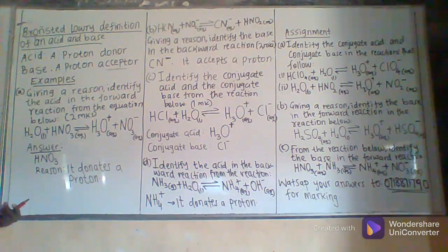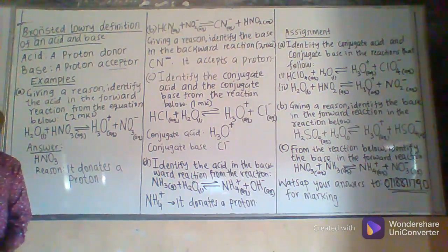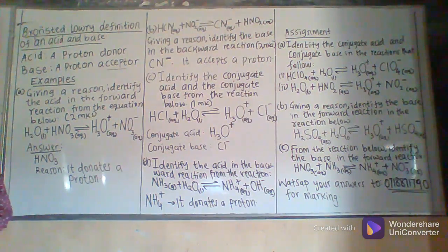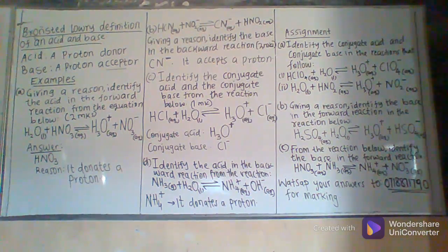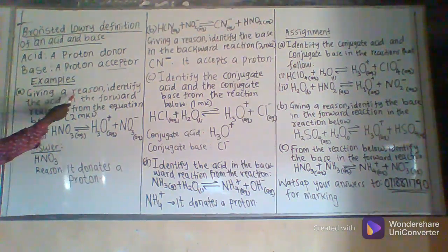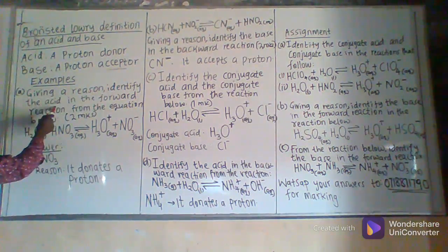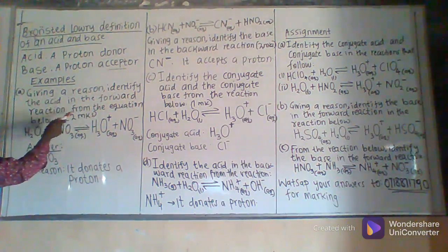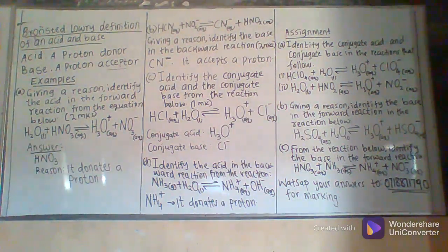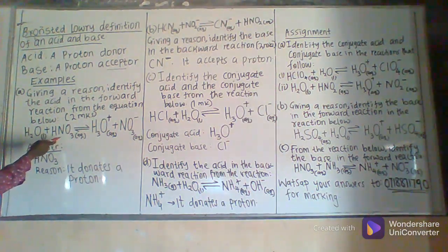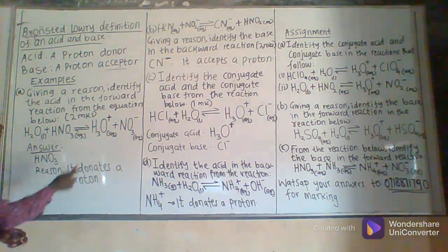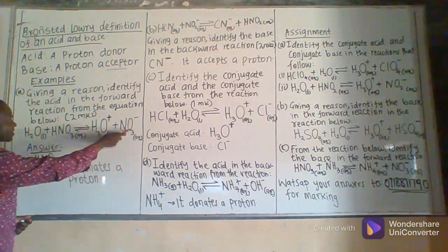I will take you through some examples applying these definitions so that you can have a better understanding of what an acid is according to Bronsted-Lowry. The first question is: giving a reason, identify the acid in the forward reaction from the equation below. The equation is H2O plus HNO3, with a double arrow showing that the reaction is reversible, forming H3O positive and NO3 negative.